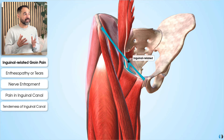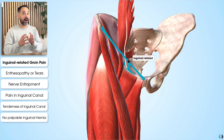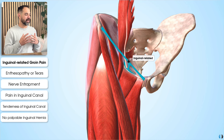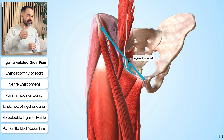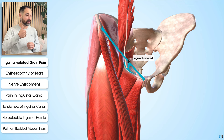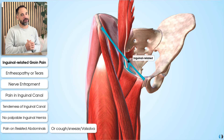A key characteristic is that there is no palpable inguinal hernia present. The group agreed that inguinal-related groin pain is more likely if the pain is aggravated with resisted testing of the abdominal muscles, or on coughing, sneezing, or when using a Valsalva maneuver.